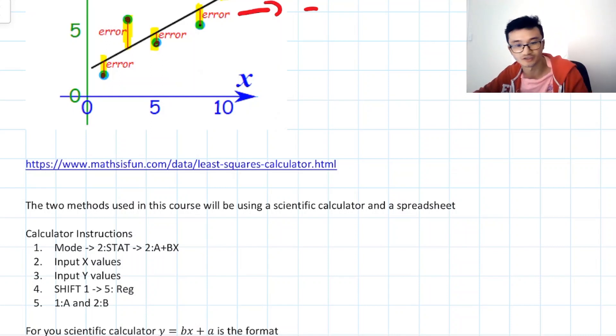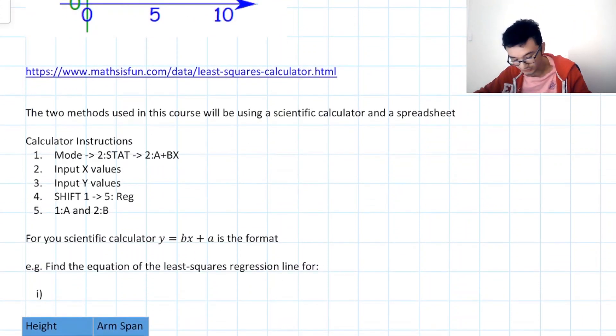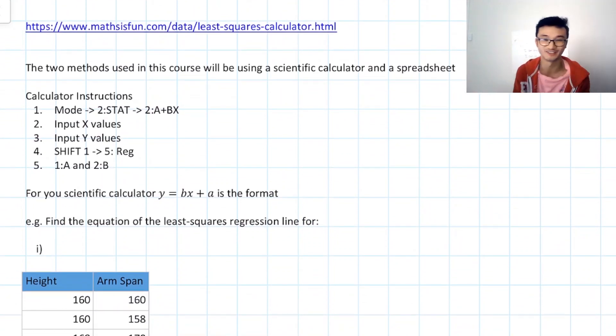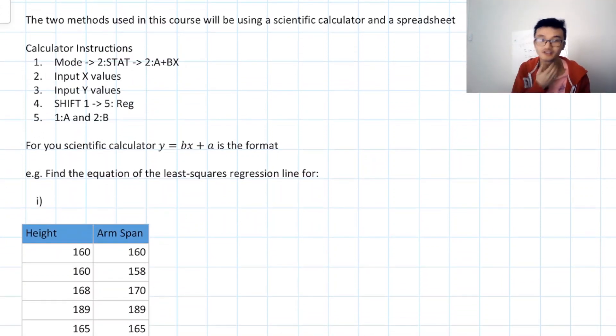So how can we actually get this equation in line? Well, there's two methods. You can use a spreadsheet or you can use a calculator. Now obviously you're not going to be able to bring a spreadsheet into your exam. I will show you that at the end though, but here are the calculator instructions and let's practice along by putting in some values. So it will be a similar method to generating the correlation coefficient using R, except right at the end we do two different steps.